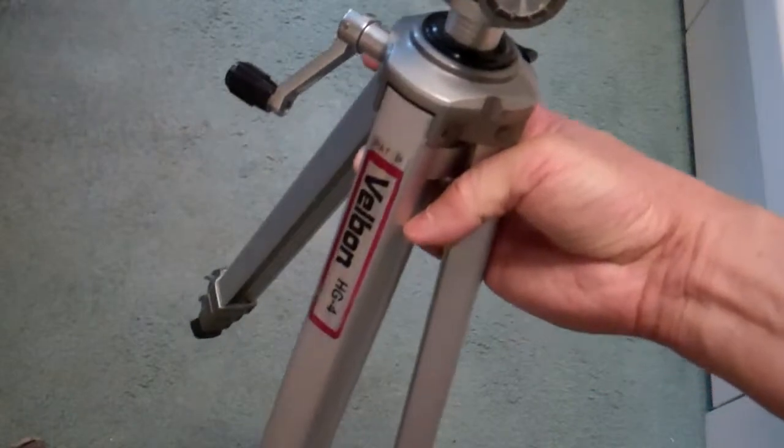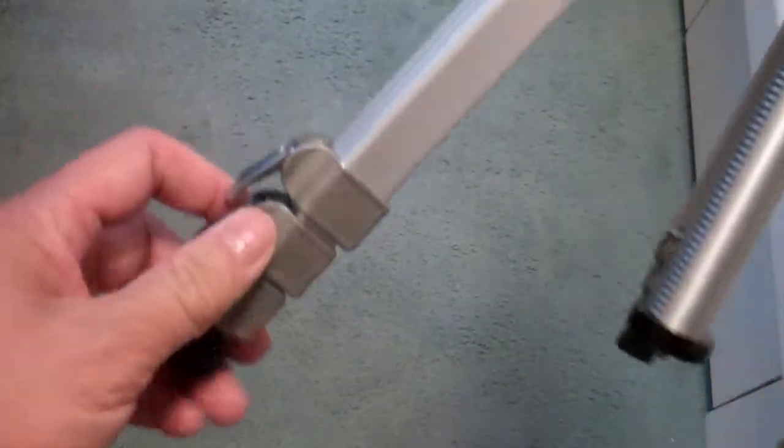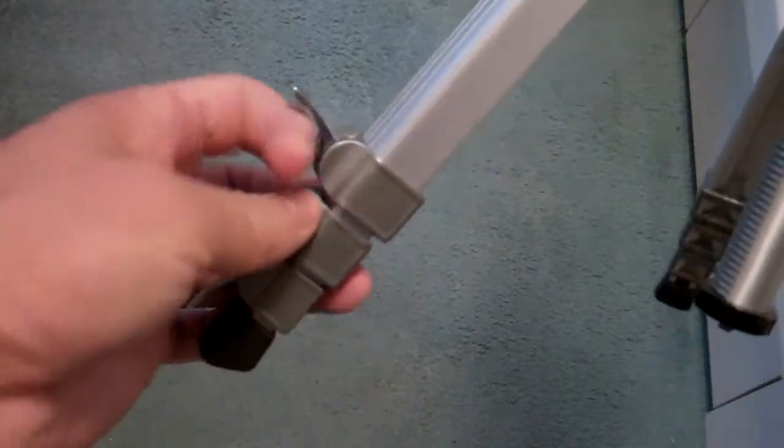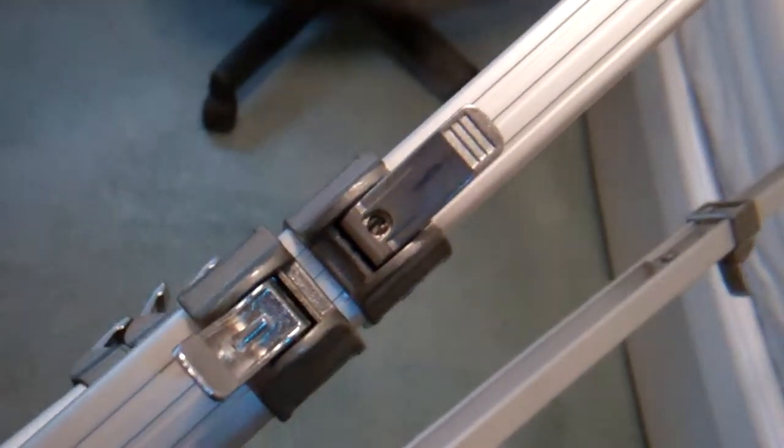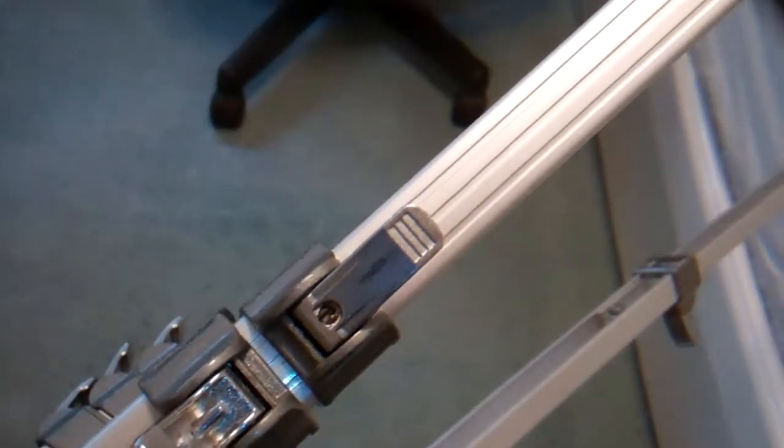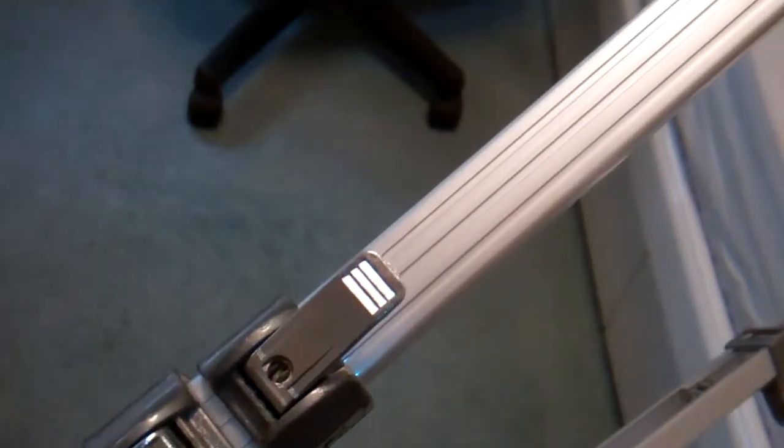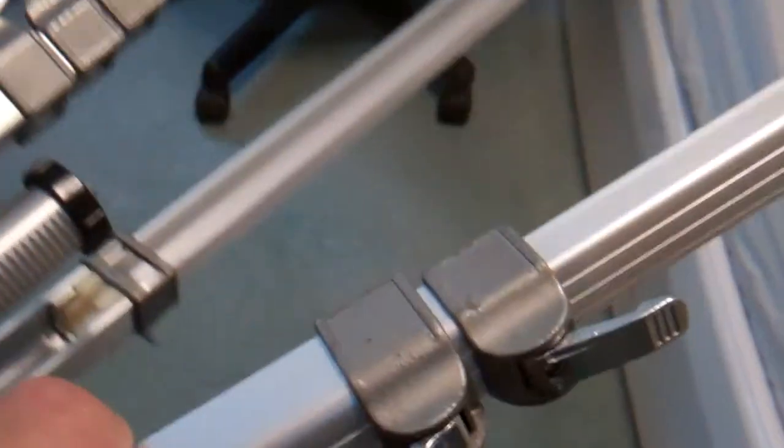This is the old style aluminum tripod with the lever tensioned legs. I've been trying to fix this tripod that has a lever tensioned leg.